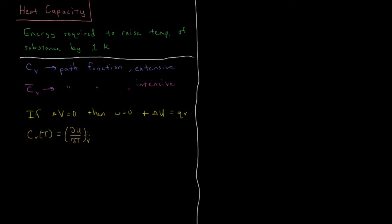If the heat capacity isn't changing too quickly — if there isn't too much variation with temperature — then CV is approximately equal to the change in internal energy during a process divided by the change in temperature, which would be equal to the constant volume heat QV divided by the change in temperature.